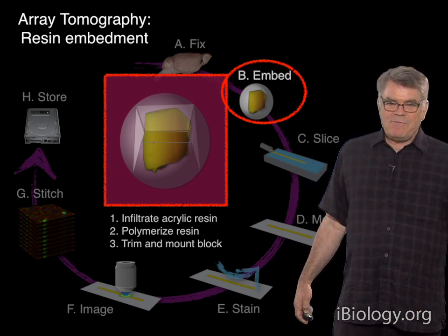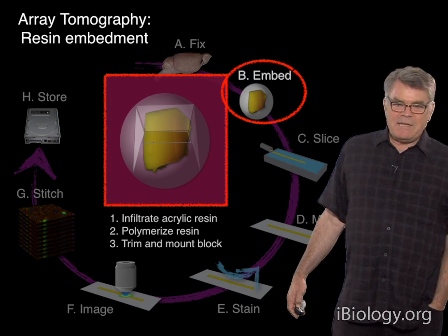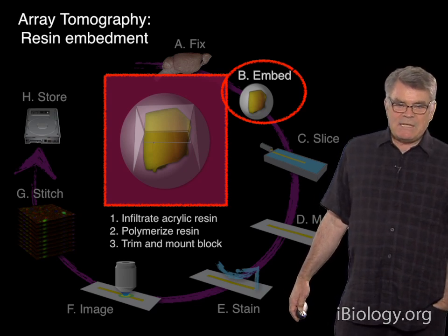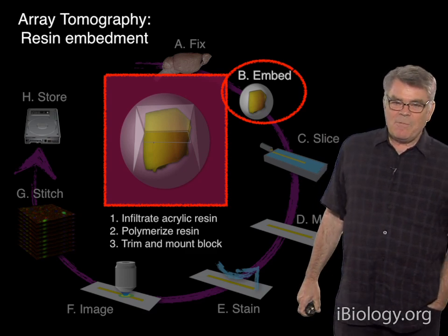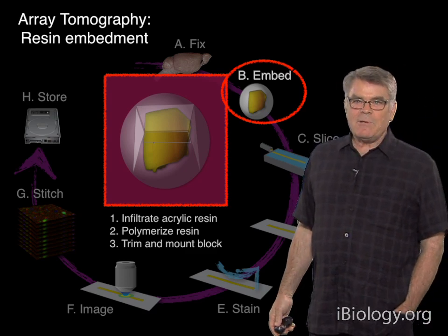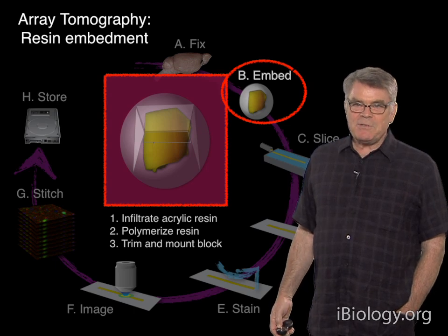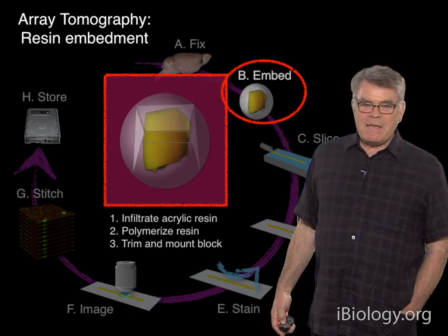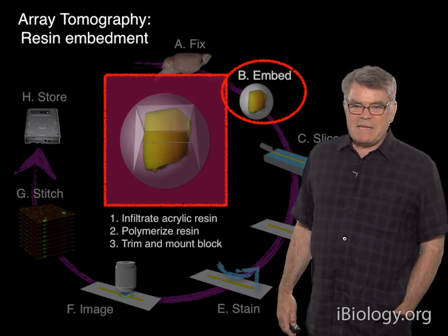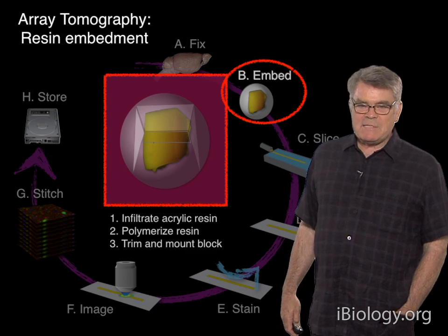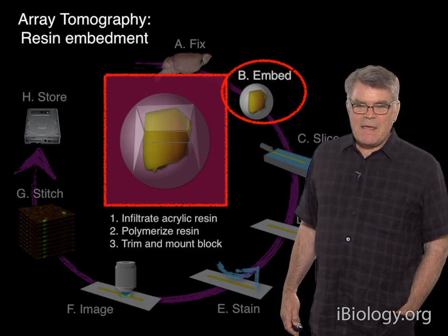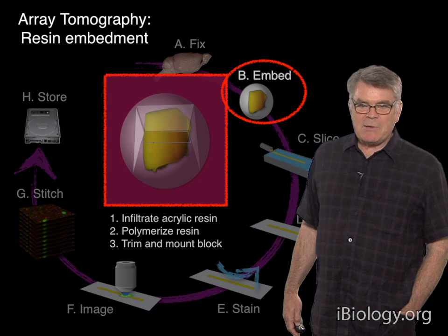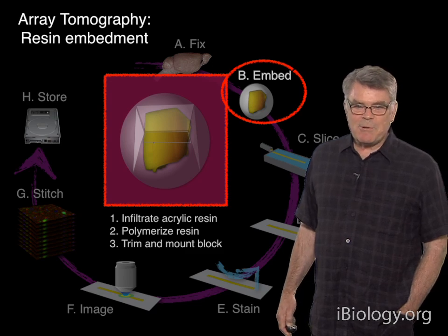After infiltrating the resin into the dehydrated specimen, the resin is polymerized, and now you've got your specimen in a solid block of plastic with ideally all of the biomolecules right where they were in that tissue's last moment of life. The tissue is embedded in a very hard piece of plastic, which can then be trimmed and mounted and prepared for sectioning on an ultramicrotome.